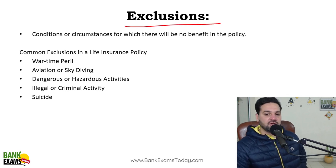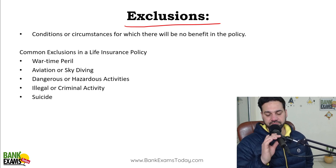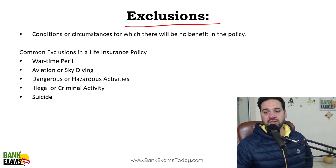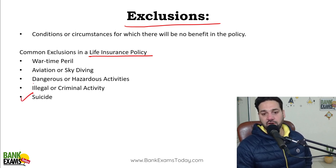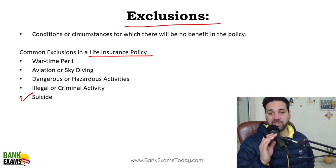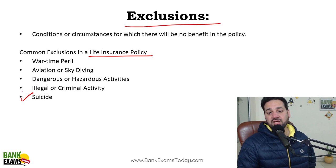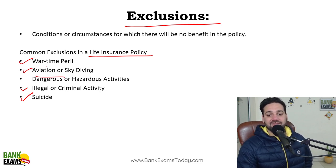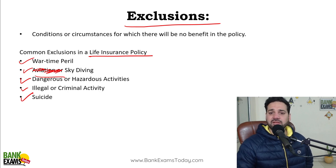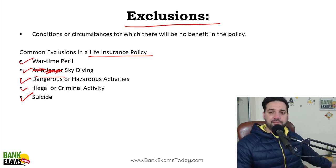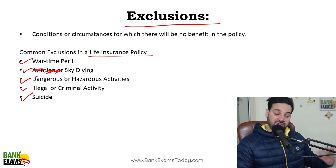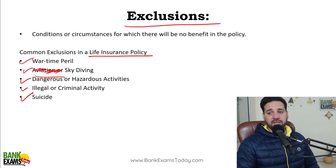Exclusions: some conditions are excluded from coverage. In case of a life insurance policy, if a person commits suicide, that won't be covered — you cannot make a claim. If a person is into illegal activities, wartime perils, skydiving, aviation, or any dangerous or hazardous activity, then in such cases the life insurance or even a health insurance company won't be giving any benefit.